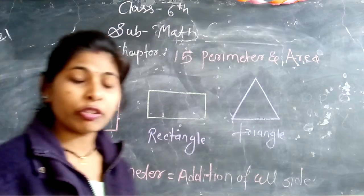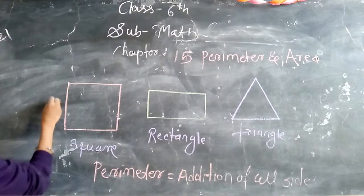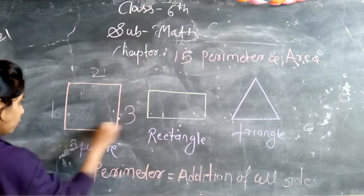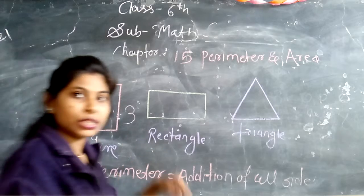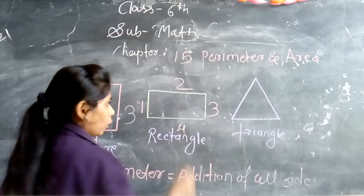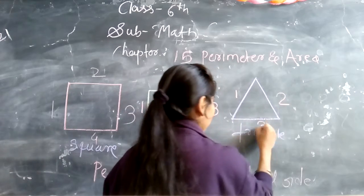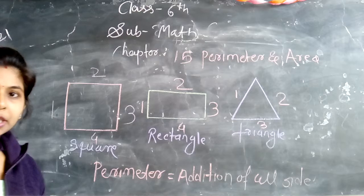So now square - how many sides? Square has four sides: first, second, third, fourth. Rectangle, how many sides? First, second, third, fourth. And triangle, how many sides? First, second, and third. So now we have the perimeter of all shapes.